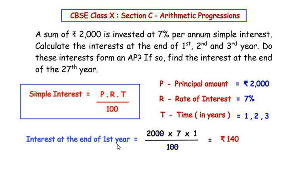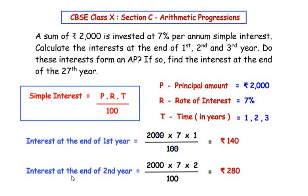Similarly, the interest at the end of the second year: the principal remains 2000, the rate is still 7%, and since it is the second year, T becomes 2. Cancelling two zeros from the denominator and numerator, we get 20 × 7 × 2, giving us the interest as rupees 280.